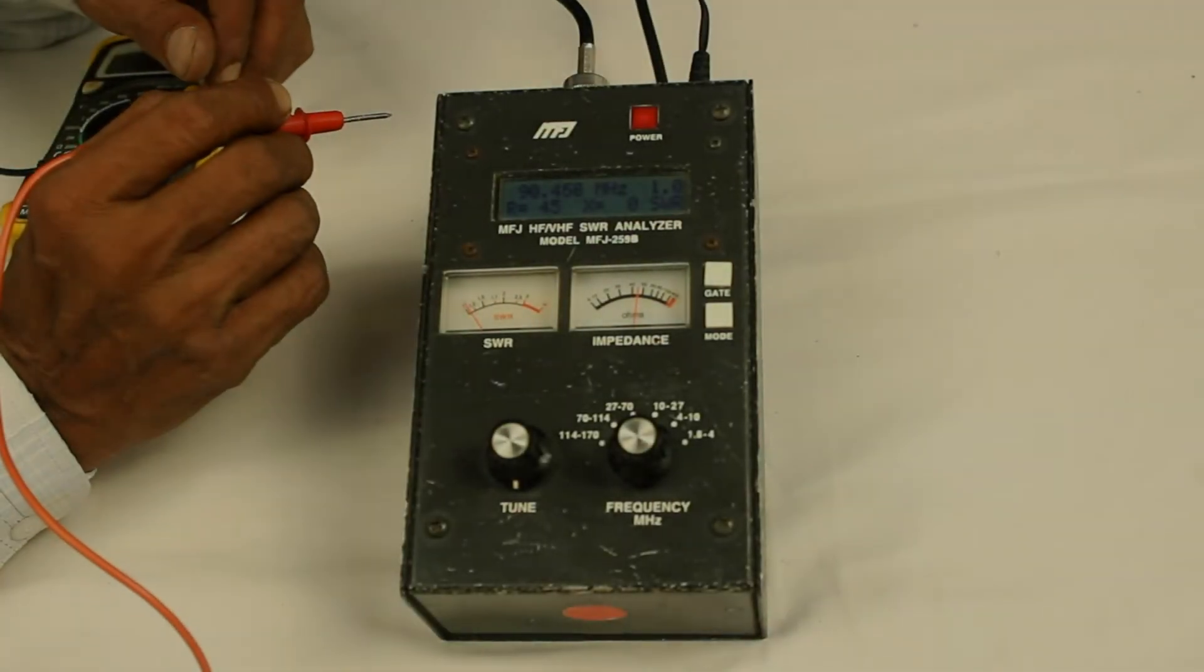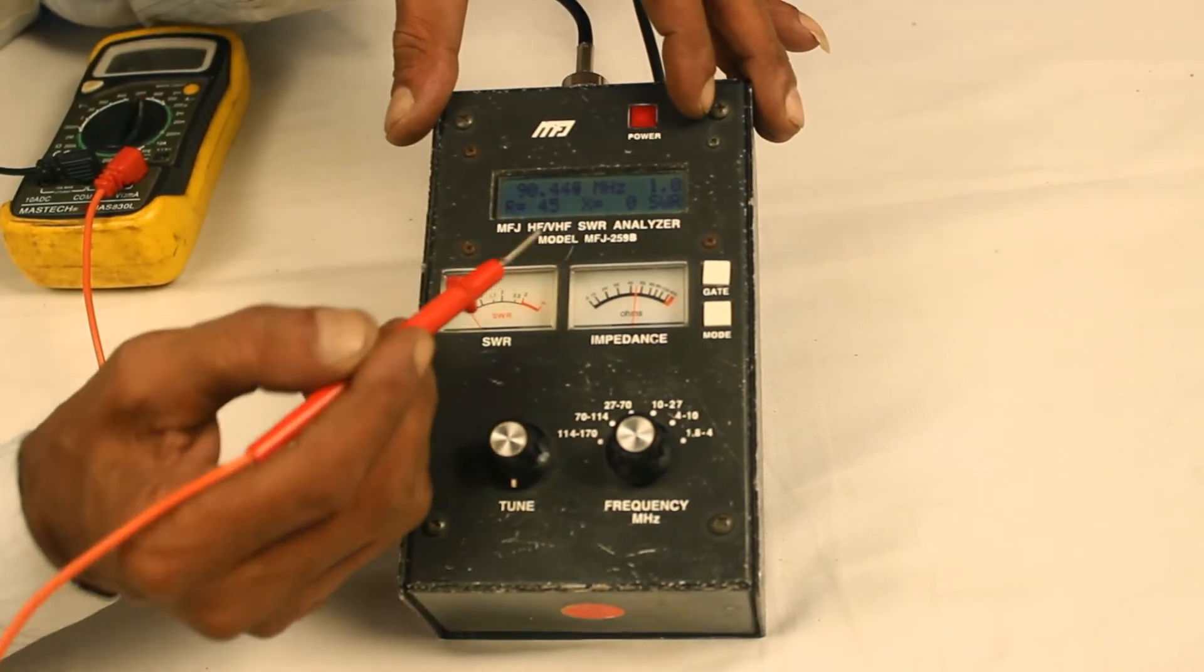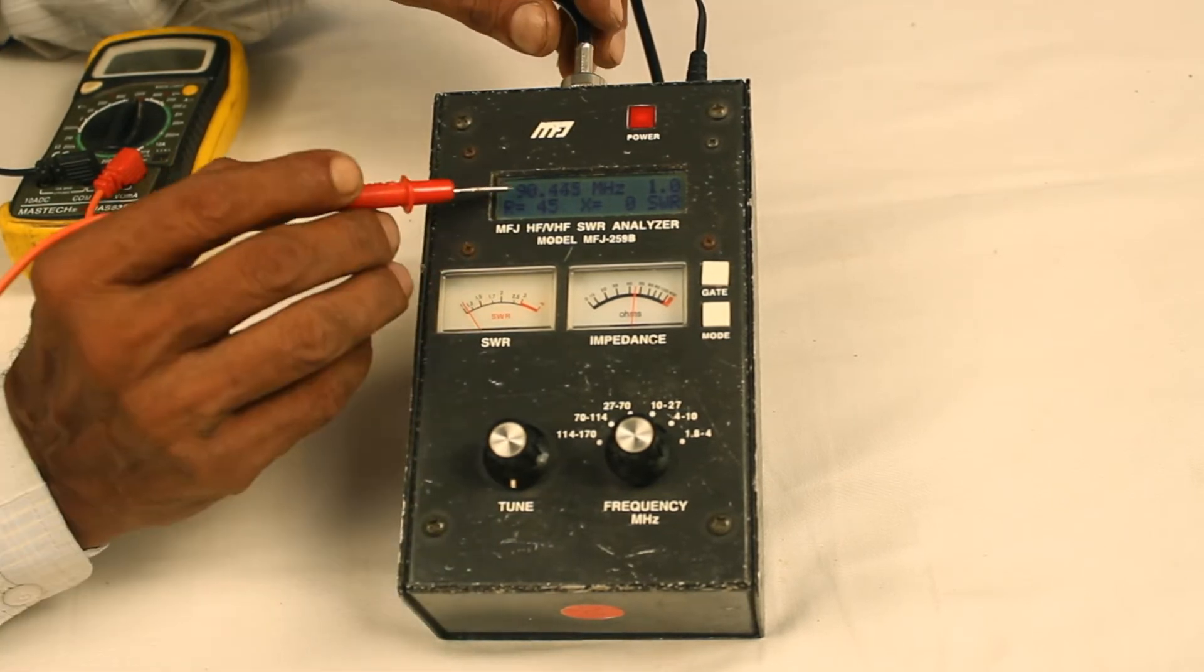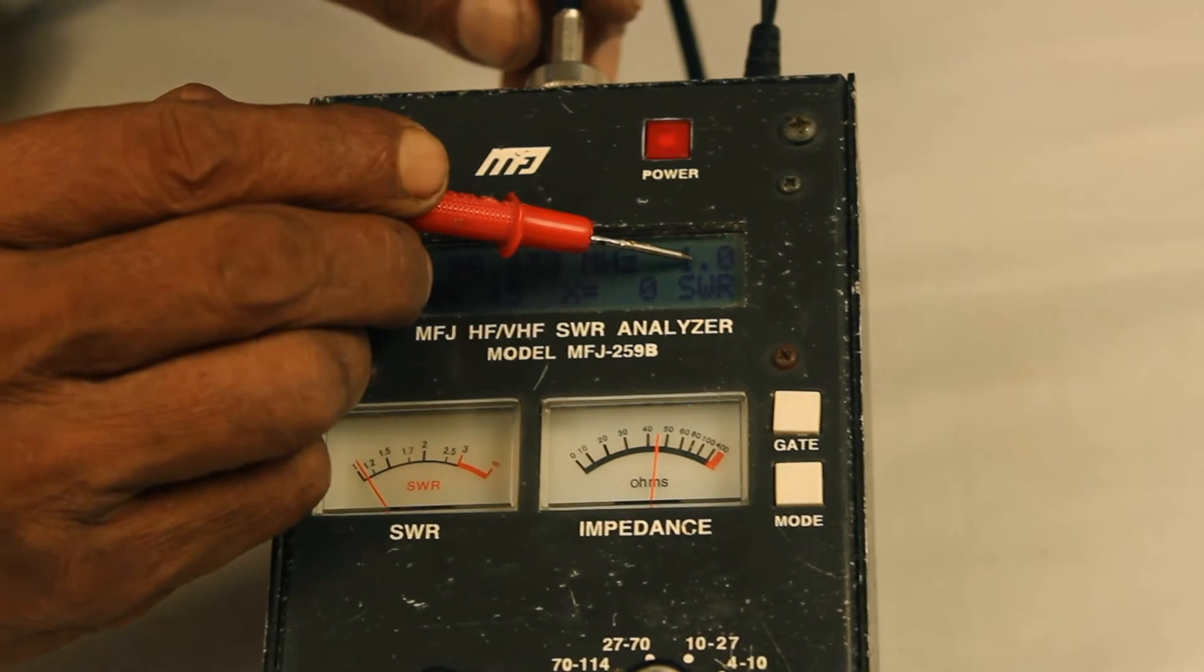SWR analyzer is used to tune antenna systems. This particular one is connected to a perfectly tuned antenna. And as you can see, transmission frequency is 90.4. SWR reading is 1.0.